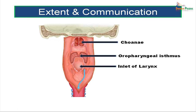Visualizing the pharynx from behind, the posterior nasal apertures — the choanae — communicate the nasal cavity with the nasopharynx. The oropharyngeal isthmus communicates the oral cavity with the pharynx. The soft palate with the uvula and the epiglottis are visible, with the tonsils in the tonsillar fossa on either side. Below is the inlet of the larynx, leading into the larynx, and below that continues the esophagus.